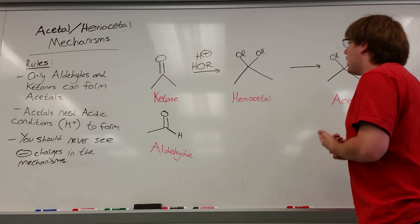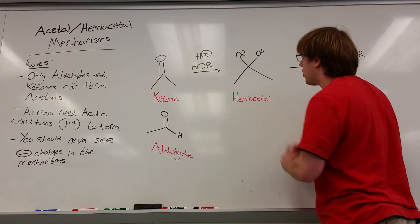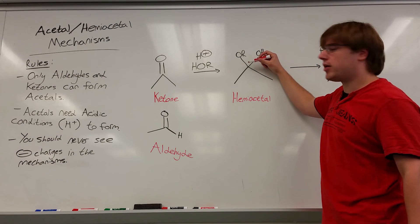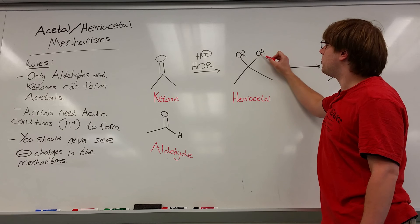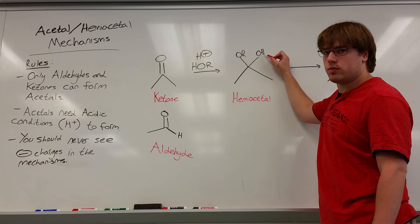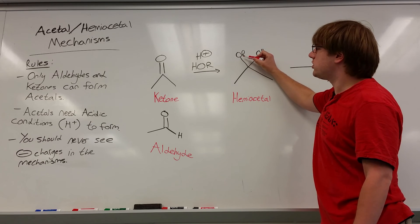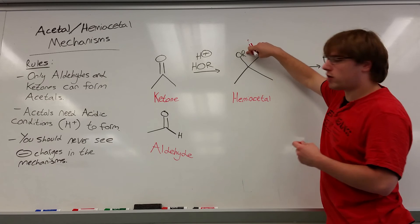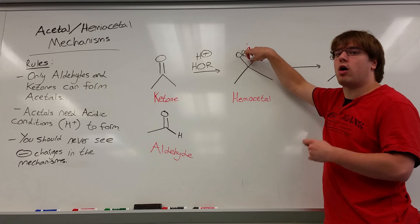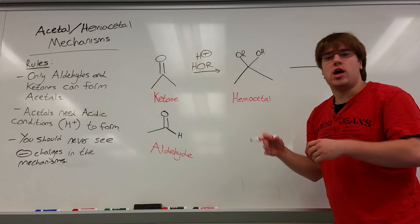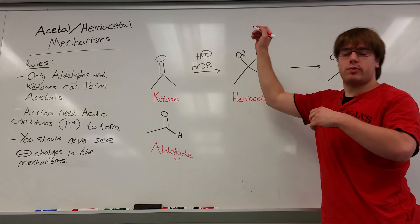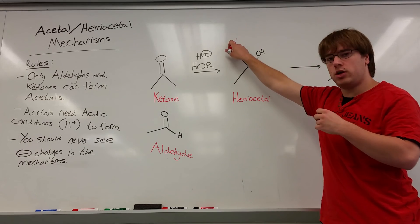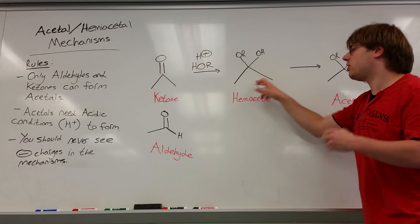A hemiacetal refers to a carbon that has two oxygen bonds on it. One oxygen will be an OH. The other oxygen will be an oxygen that has other carbons on it — so we write OR. R can be a CH3 or a whole carbon chain. As long as it's O-carbon, this is a hemiacetal.